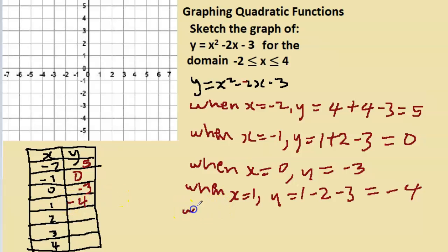Next x value is 2, so when x is 2 we have x², that's 2², 2² means 2 times 2, 4, and -2x, that's -2 times 2, that's -4, and -3. 4 - 4 is 0, so we're left with -3.